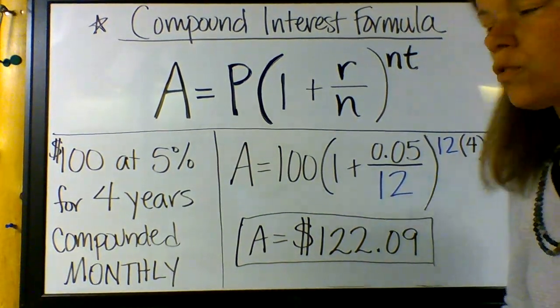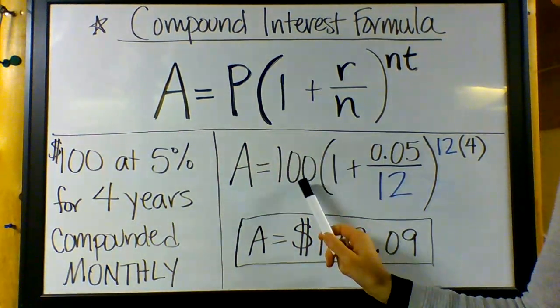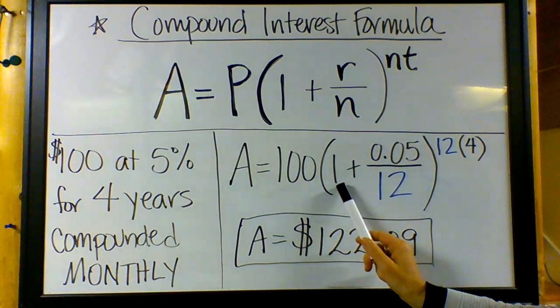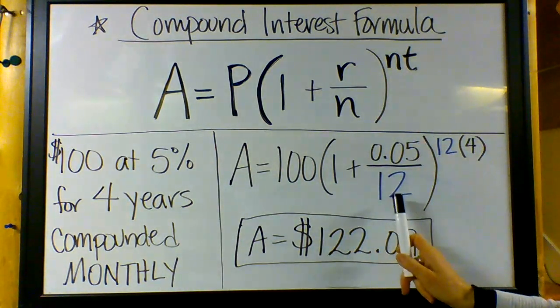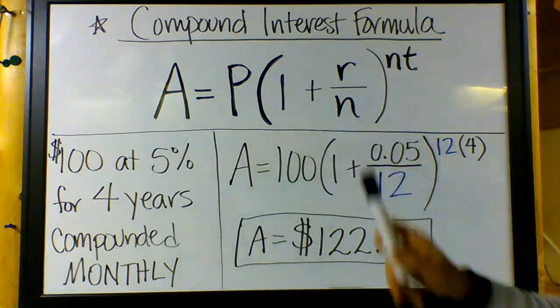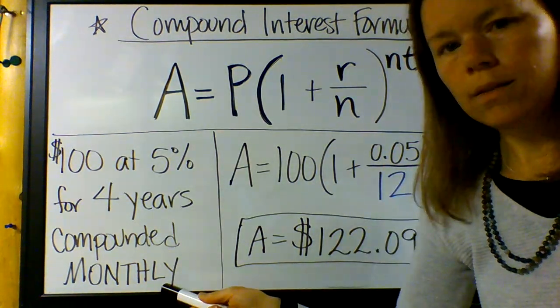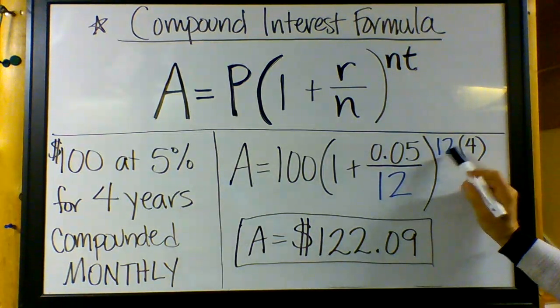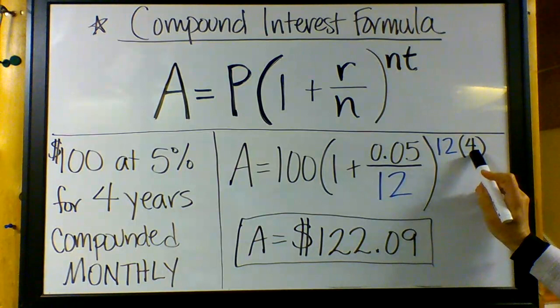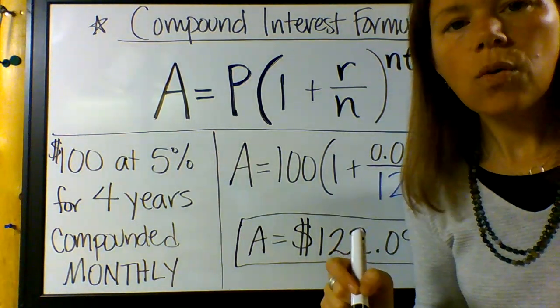So if we have $100, we're going to plug in 100 where the P is. We're going to keep the 1. We're going to plug the rate in where the r is, plug the 12 in where the n is - the 12 is the number of times per year, we said monthly - and then plug in the 12 again where the n is and a 4 where the t is for four years.